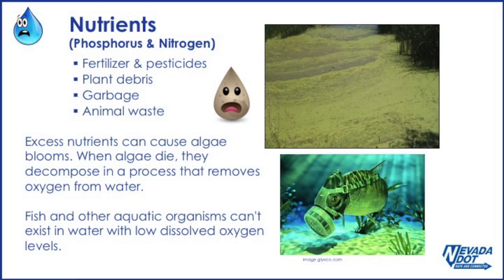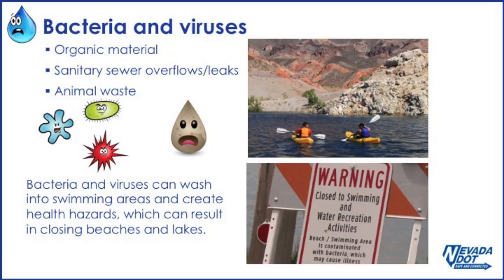Nutrients from fertilizer and pesticides, plant debris, garbage, and animal waste can create excess nutrients, which can cause algae blooms. When algae die, they decompose in a process that removes oxygen from the water. Fish and other aquatic organisms can't exist in water with low dissolved oxygen levels.